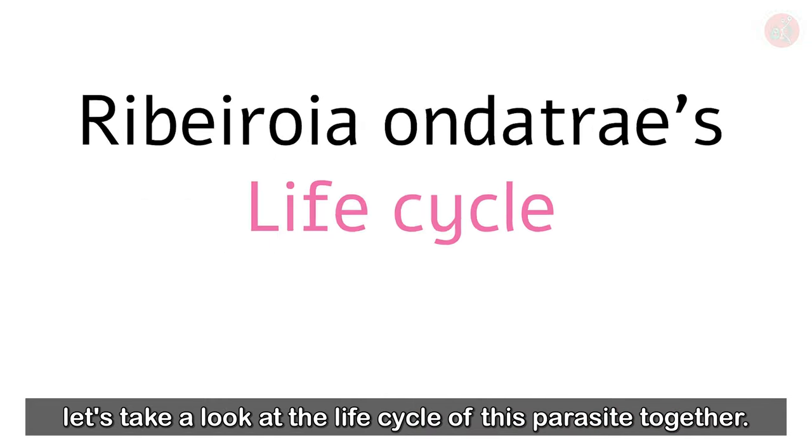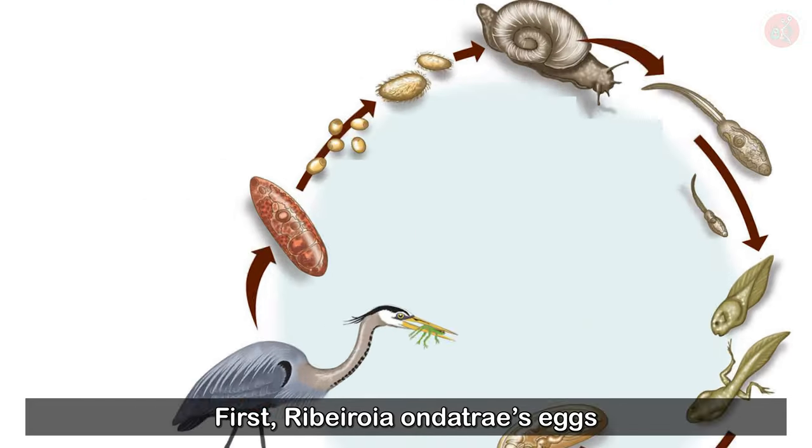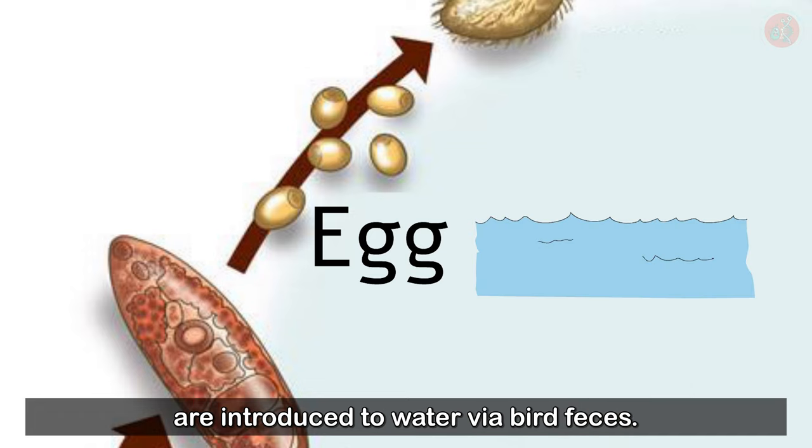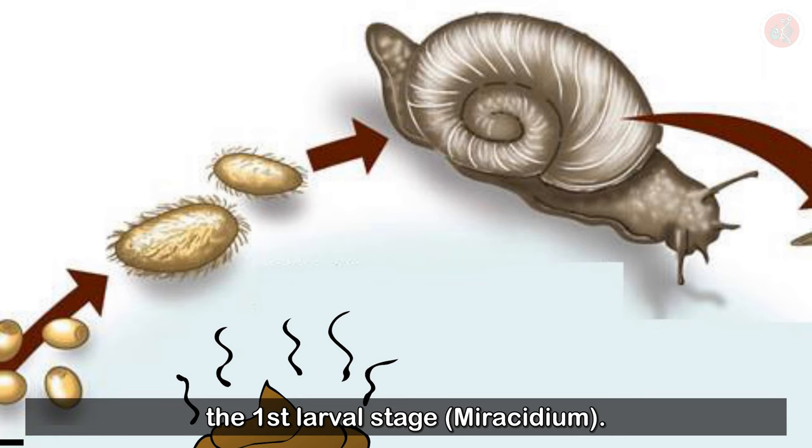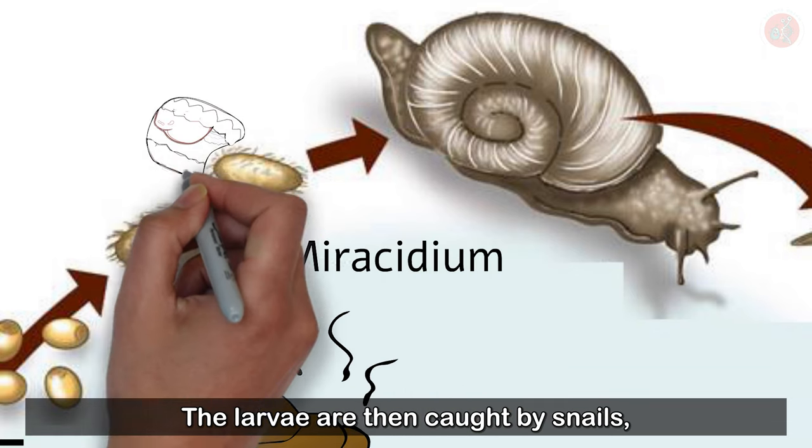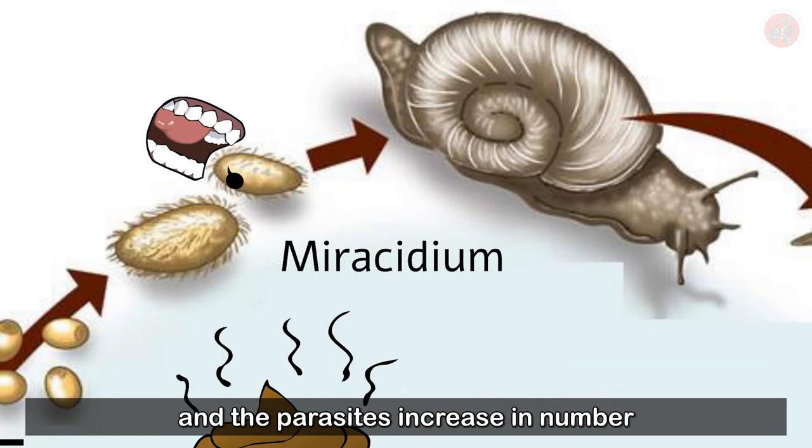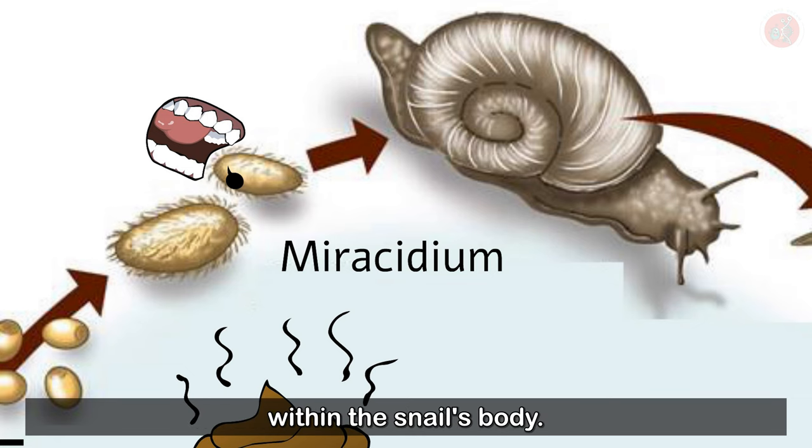To help you understand, let's take a look at the life cycle of this parasite together. First, Ribeiroia ondatre's eggs are introduced to water via bird feces. The eggs hatch in water and go through the first larval stage, myricidium. The larvae are then caught by snails, and the parasite increases in number within the snail's body.